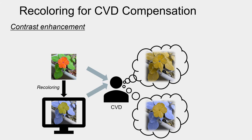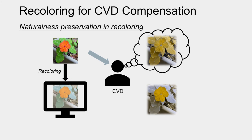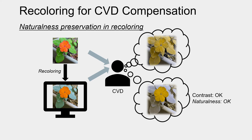Several recoloring algorithms have been proposed for CVD compensation. For the recolored image, contrast is enhanced. However, a big change to the perception of CVD may cause loss of naturalness. Naturalness-preserved recoloring can enhance the contrast for CVD while making the deviation from the perception of the original image as small as possible.